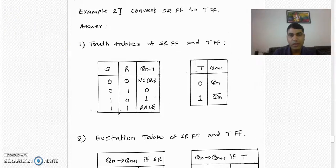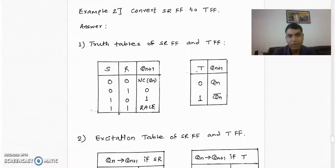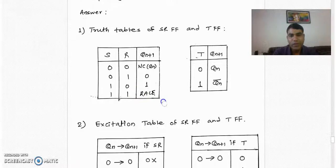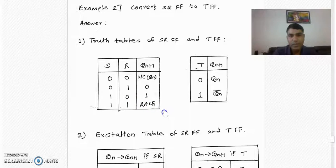To understand this well, we will see the first example: converting an SR flip-flop to a T flip-flop. The first step is we should know the truth tables of SR flip-flop as well as T flip-flop.